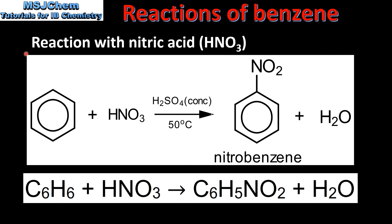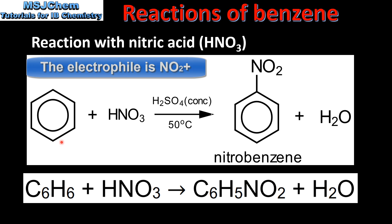Next we look at the reaction of benzene with nitric acid. Here we have benzene plus nitric acid, with concentrated sulfuric acid as the catalyst at 50 degrees C. The products are nitrobenzene and water. The equation is: benzene plus nitric acid with a sulfuric acid catalyst forms nitrobenzene plus water.